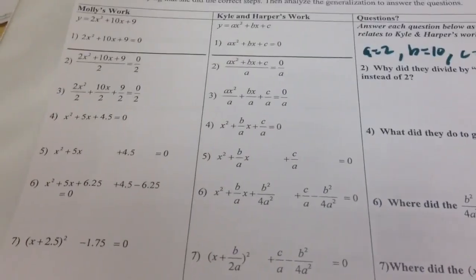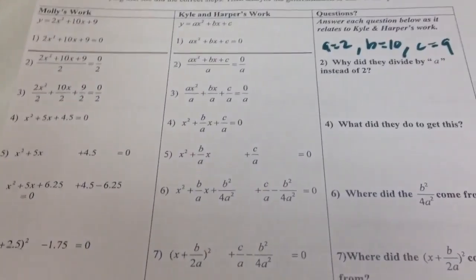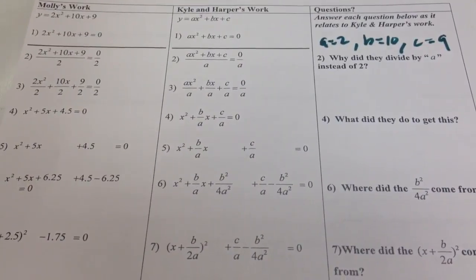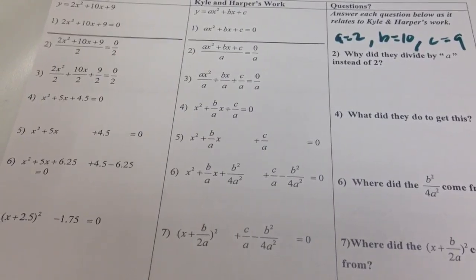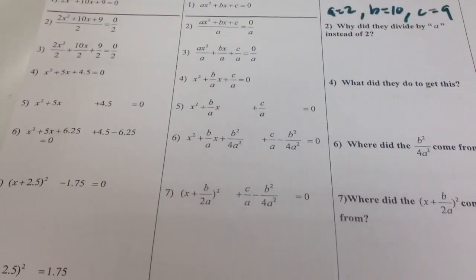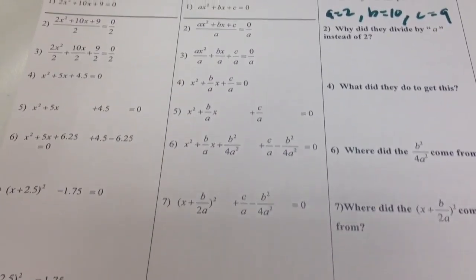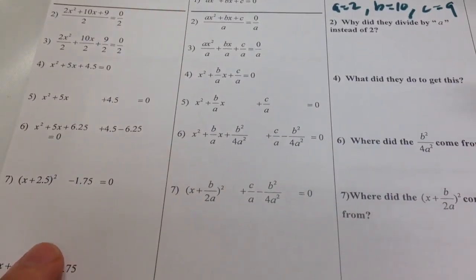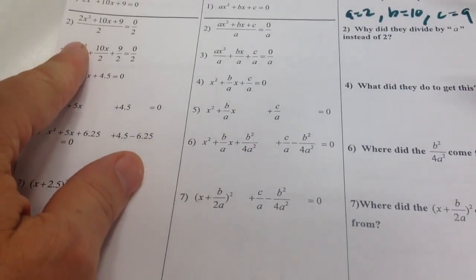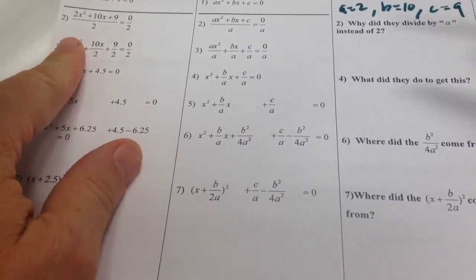And that's a little bit off the screen, so let me slide this over a little bit. The next line. So Molly divides everything by 2. So in the same way, Kyle and Harper would divide everything by a.